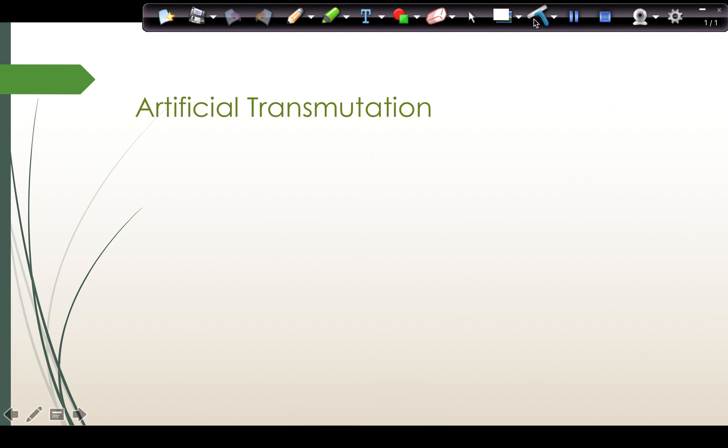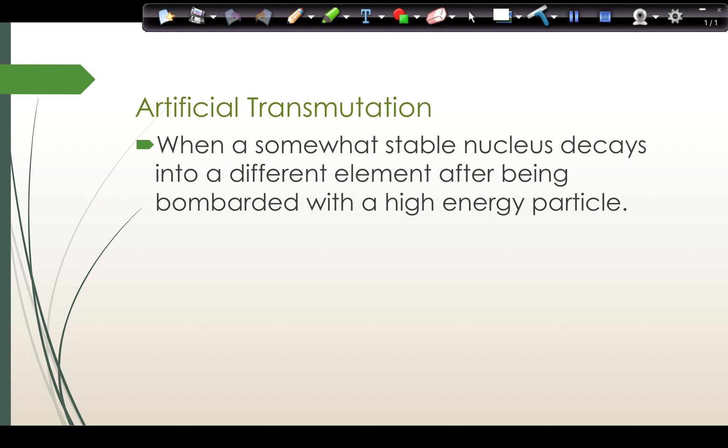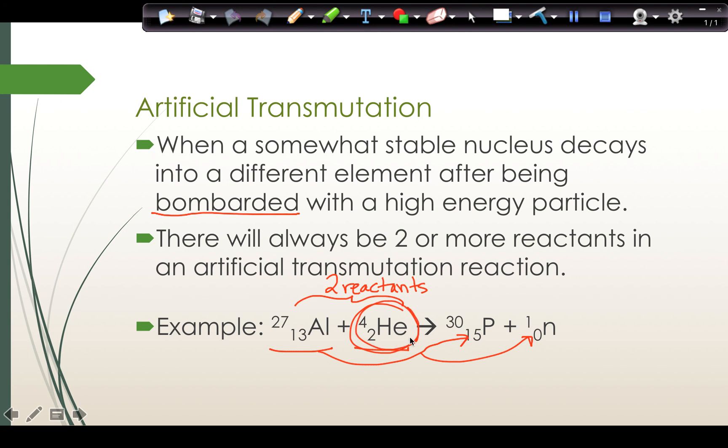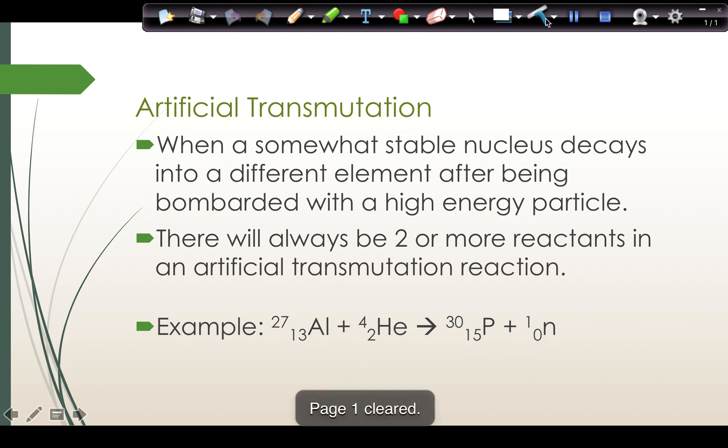When we talk about artificial transmutation, artificial transmutation is not spontaneous. It does not happen on its own. This happens when a somewhat stable nucleus decays into a different element after being bombarded with a high-energy particle. We have to actually hit the nucleus with something going at tremendous speed with tremendous energy in order to make this particle unstable. So there will always be two or more reactants in an artificial transmutation reaction showing that they have to be hit together. An example would be if aluminum-27 is usually stable, but we hit it with a high-energy alpha particle, this aluminum turns into phosphorus-30 and gives off a neutron.